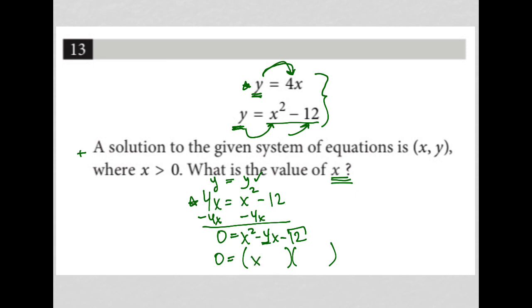Well, that would be negative 6, so x minus 6, and plus 2. So negative 6 times positive 2 is negative 12, and negative 6 plus 2 is negative 4. That's how we factor a trinomial, especially a trinomial that does not have a coefficient in front of the x squared term.